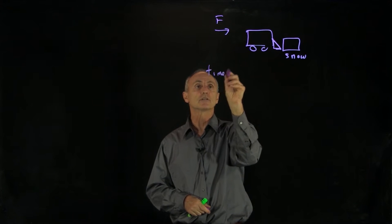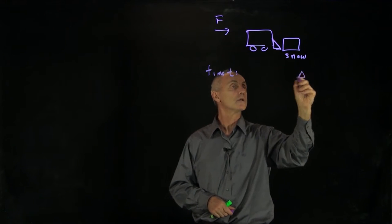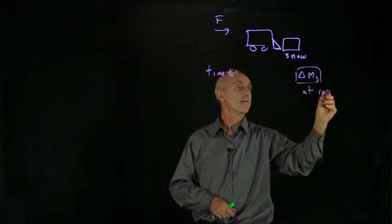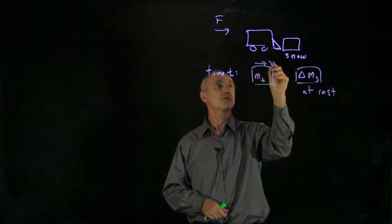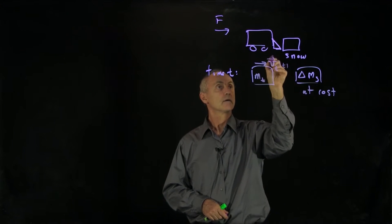Well, let's look at our situation at time t. And what we're going to do is we're going to consider a certain mass of snow, delta ms, that's at rest. And our truck, with a fixed mass truck, is moving with a velocity vt at time t, v truck.